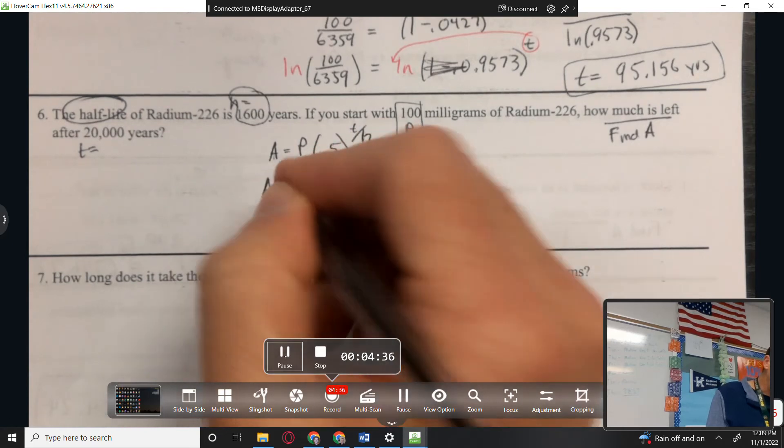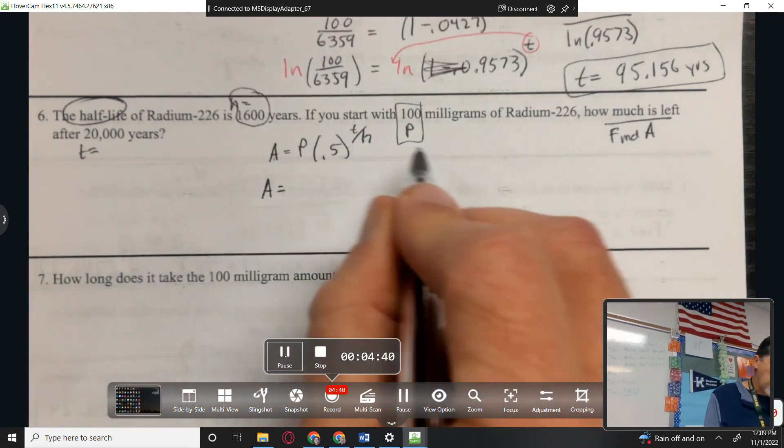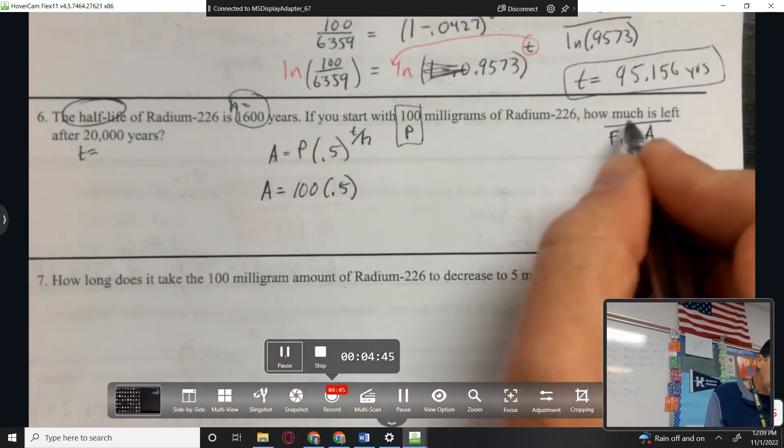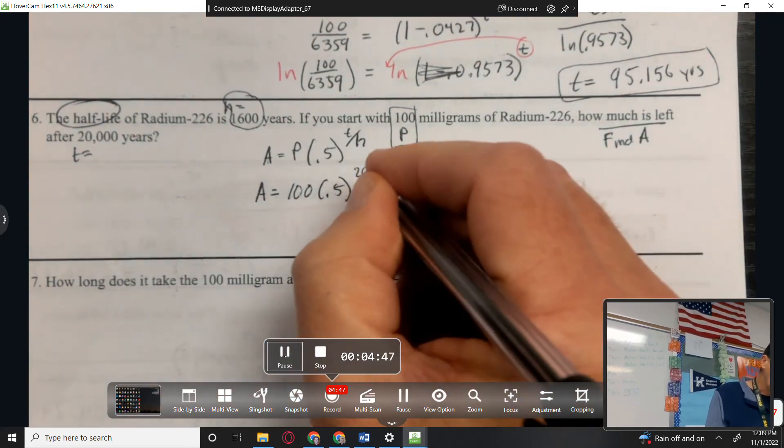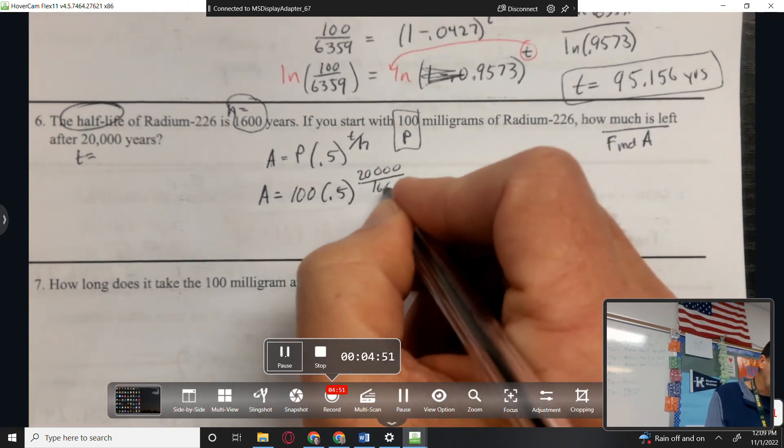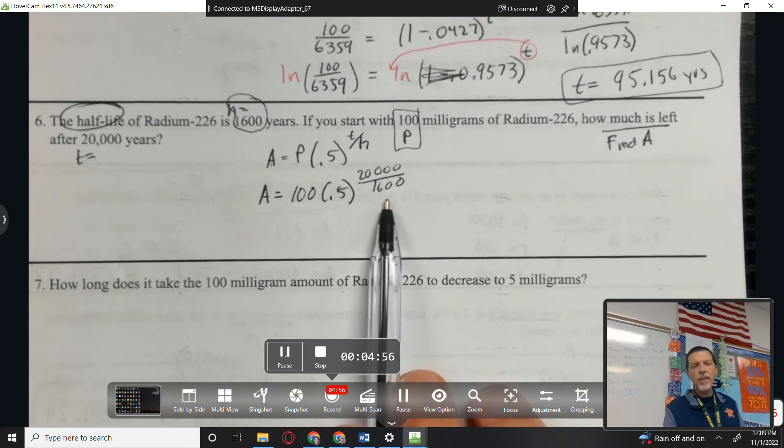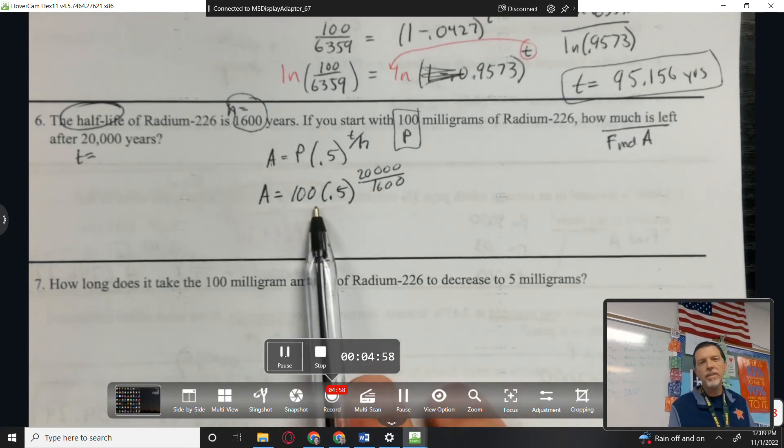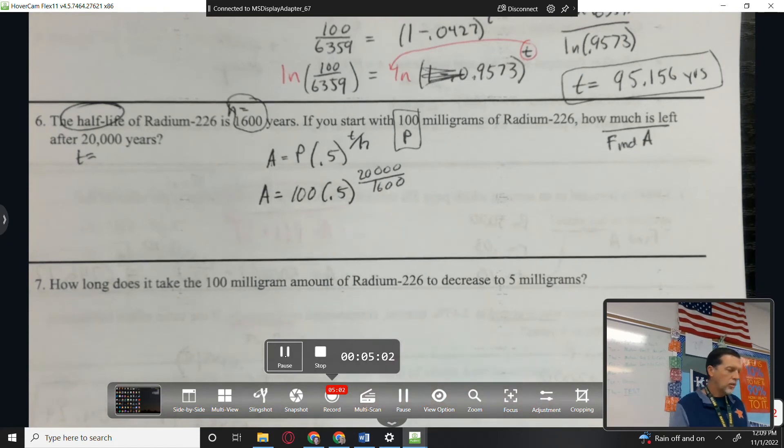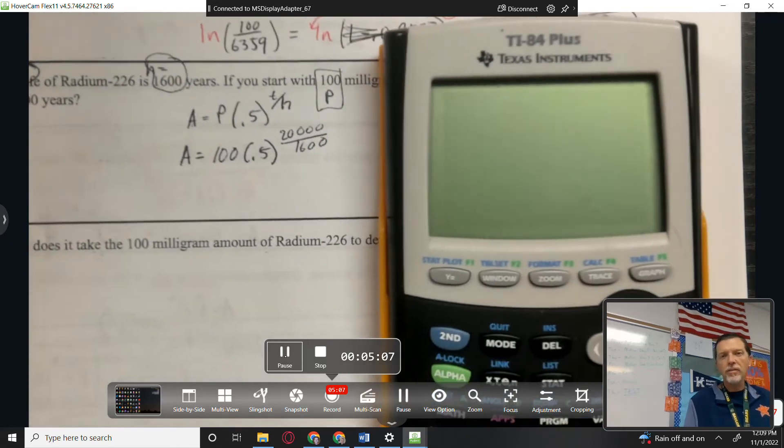So A, we don't know. We started with, there's a lot of numbers in this one. Started with 100. 0.5. T is 20,000 years over 1600 years. Basically, 20,000 divided by 1600 is how many times it will be cut in half. So we're going to multiply it by a half however many times 20,000 over 1600 is. That's a little explanation for why the formula works.